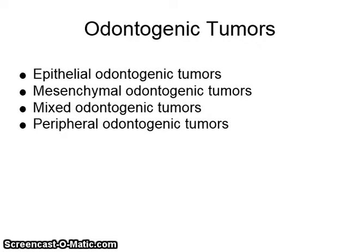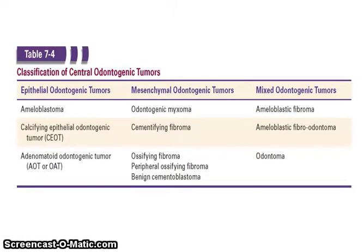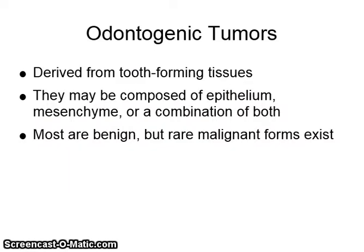Odontogenic tumors include epithelial odontogenic tumors, mesenchymal odontogenic tumors, mixed odontogenic tumors, and peripheral odontogenic tumors — see Table 7-4 in your textbook for more information. Odontogenic tumors are derived from tooth-forming tissues and may be composed of epithelium, mesenchyme, or a combination of both. Most are benign, but rare malignant forms exist.